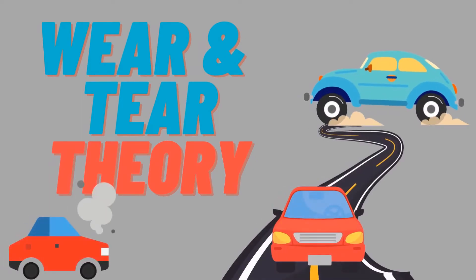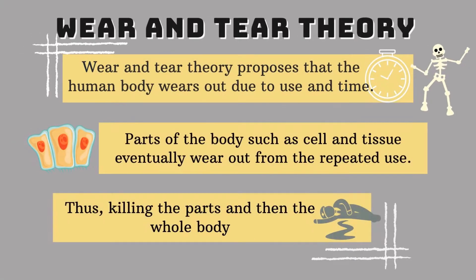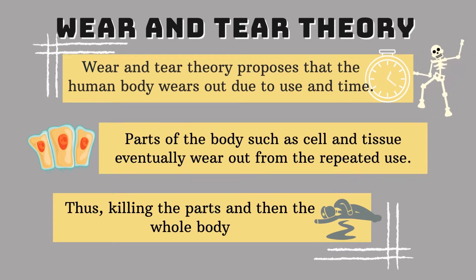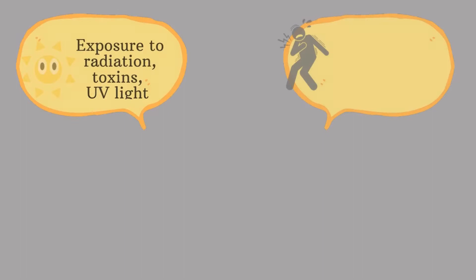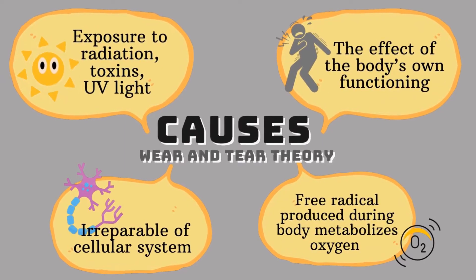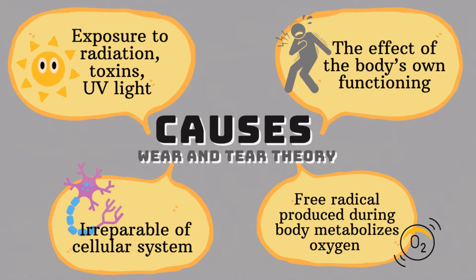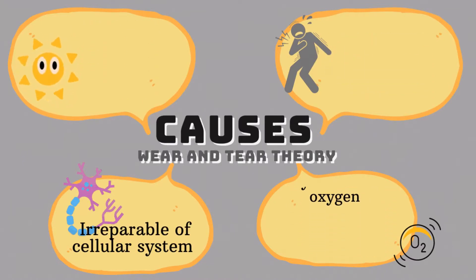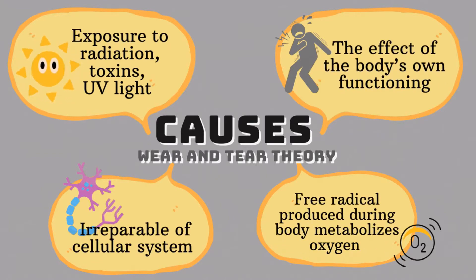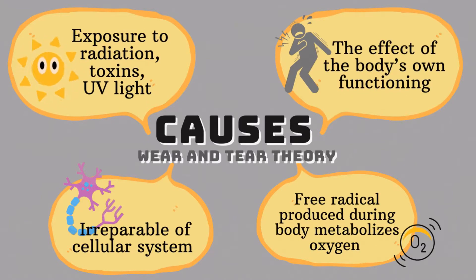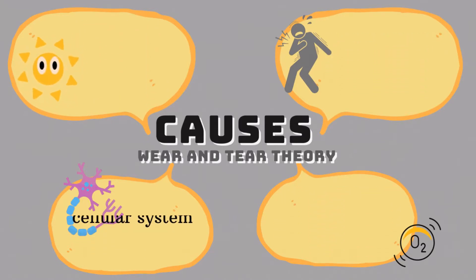The first theory is the wear and tear theory. It proposes that the human body wears out due to use and time. Parts of the body such as cells and tissue eventually wear out from repeated use, thus killing the parts and then the whole body. Wear and tear damage can also occur because of exposure to radiation, toxins, and UV light, uncontrolled oxidative stress, free radicals produced when the body metabolizes oxygen, and irreparable cellular systems such as nerve cells in the brain.